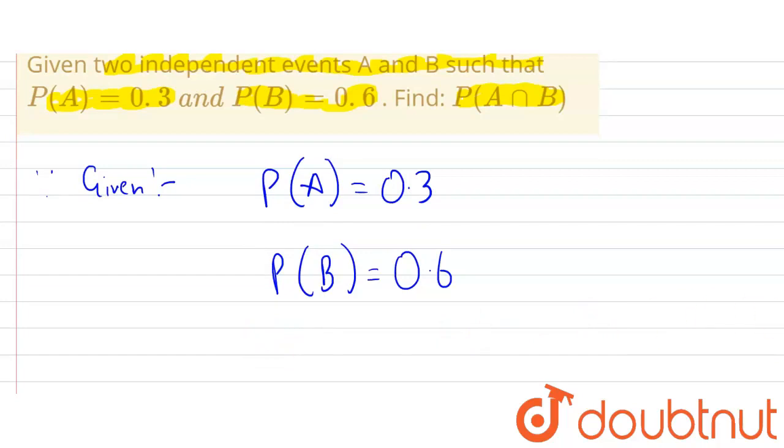So what we need to find? We need to find P(A intersection B). Now we know a formula. Since we know that P(A intersection B) is equals to P(A) into P(B).